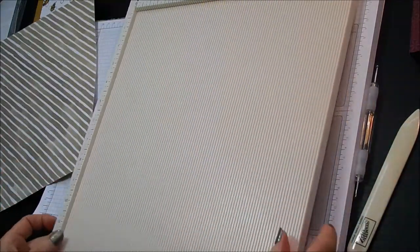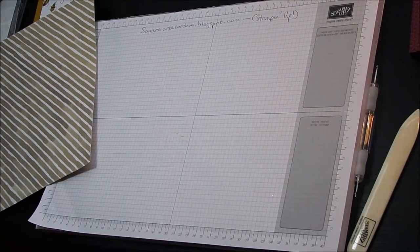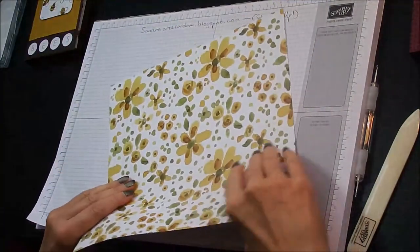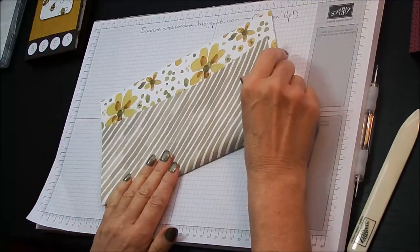So we'll just put the board out of the way, and then we'll bring that back in and we'll start folding and burnishing our score lines.